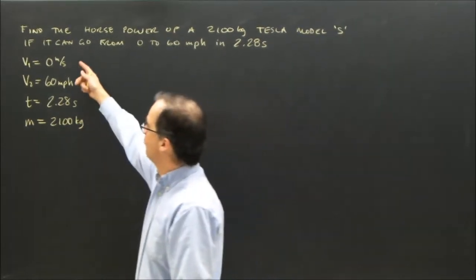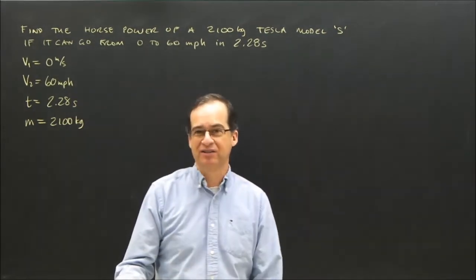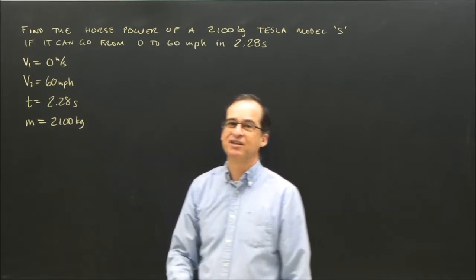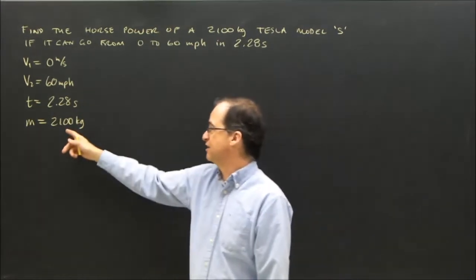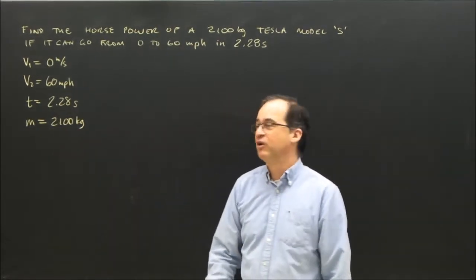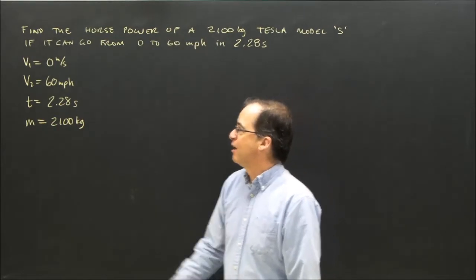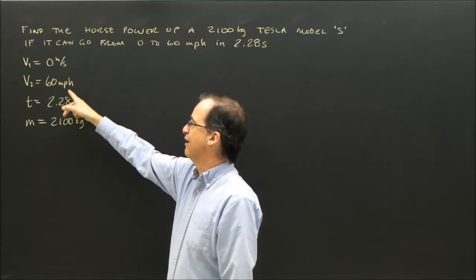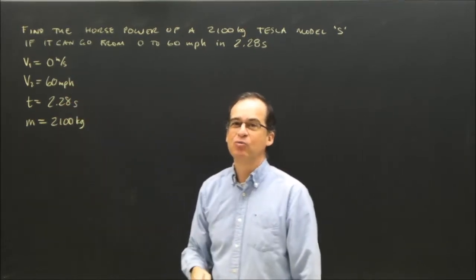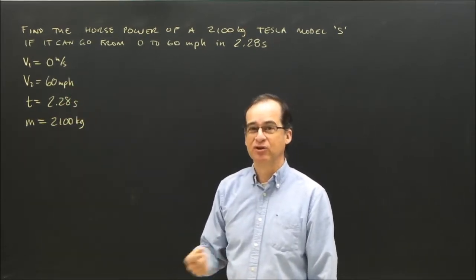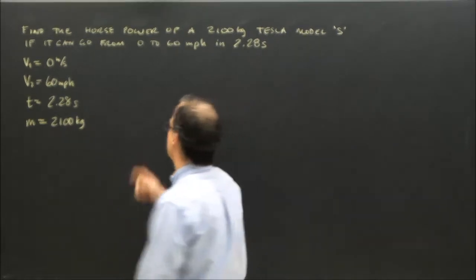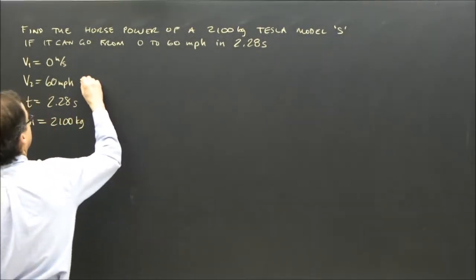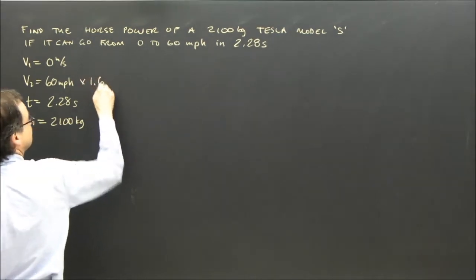I've written down my givens. The car started from rest, sped up to 60 miles per hour in 2.28 seconds, and the mass of the Tesla Model S is 2100 kilograms. First, before we do anything, we check our units. 60 miles per hour needs to be converted to meters per second. First, we turn miles per hour to kilometers per hour by multiplying by 1.6.